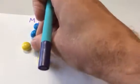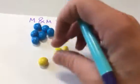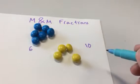And how many are blue? Six. So there's six blue, and how many are yellow? Four.